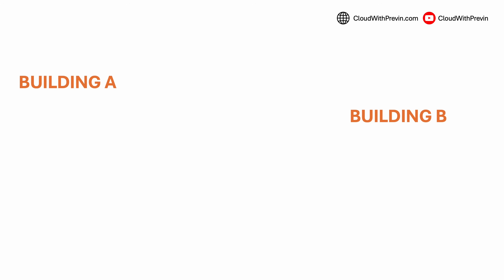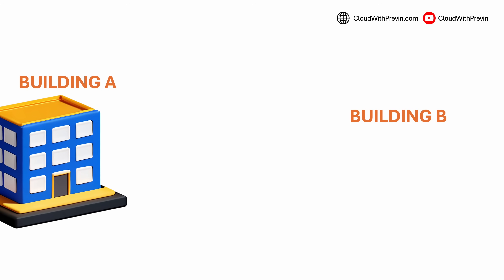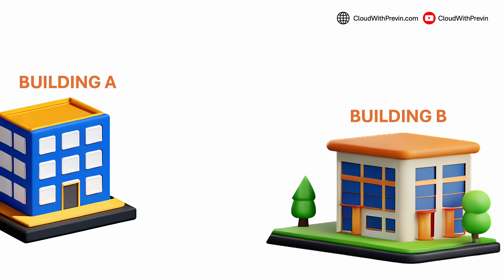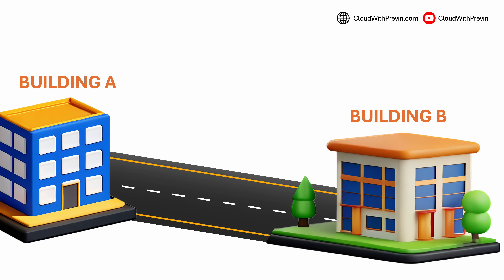Here's a simple example. Imagine building A is your app service and building B is your database. VPC peering is like a private internal hallway that connects the two buildings. Instead of going outside through the public internet, everything stays in your private network. It is fast, secure and direct.